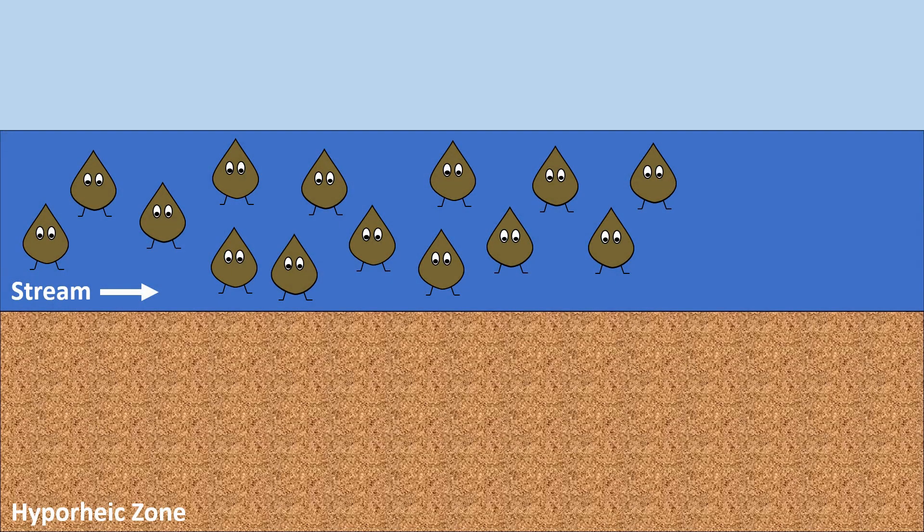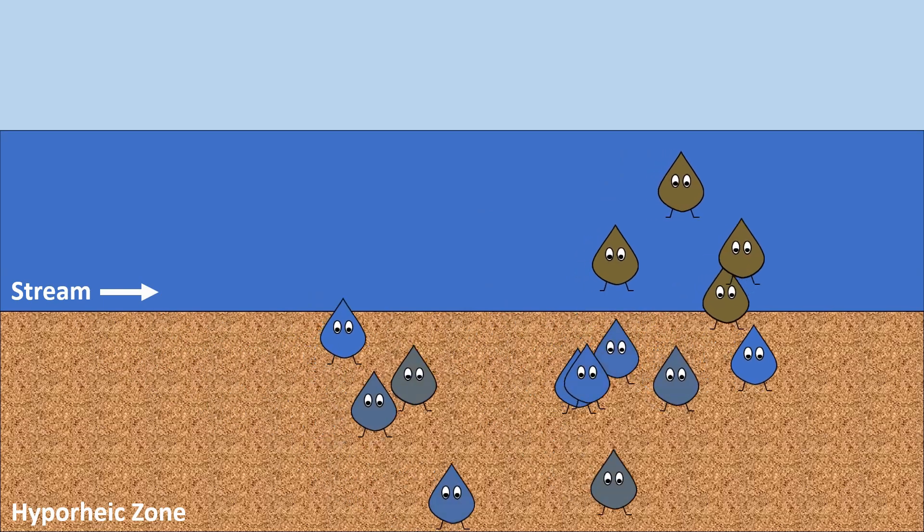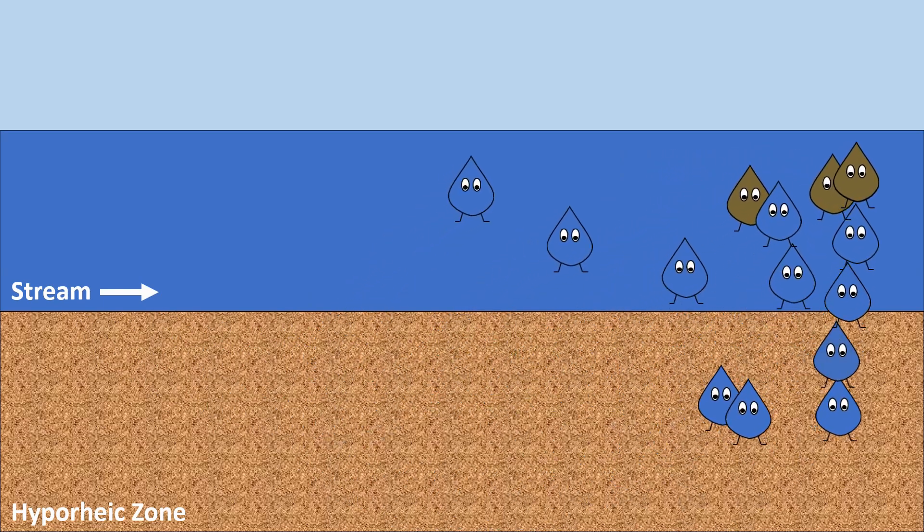At the Colorado School of Mines, we are developing an engineered hyporheic zone that harnesses this natural process. Our goal is to increase the cycling of water between the stream and the hyporheic zone so more stream water is treated.